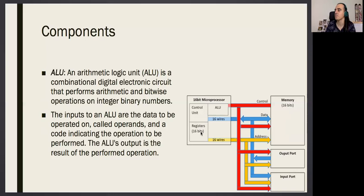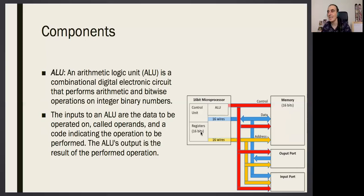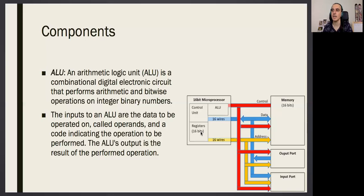The ALU is used to make operations on information kept in memory and registers. The inputs to an ALU are the data to be operated on — called operands, like in mathematics — and a code indicating the operation to be performed. This code is what we will call an instruction in assembly language.